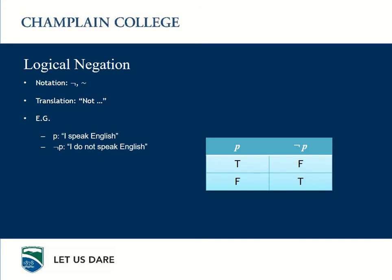The first one we are going to see is the logical negation. There are a couple of different notations to represent NOT — there's that symbol, and we can also use the tilde. The English translation of the negation is NOT something. For instance, the negation of 'I speak English' is 'I do not speak English.' If proposition P is TRUE, the negation of P is FALSE. If P is FALSE, NOT P is TRUE. So NOT transforms TRUE to FALSE and FALSE to TRUE.